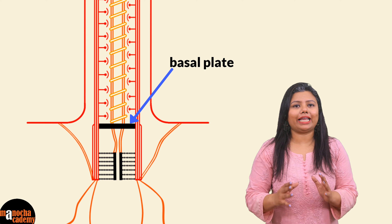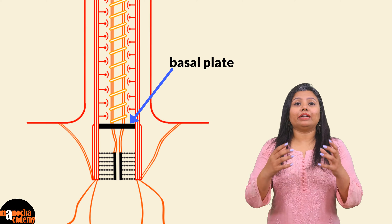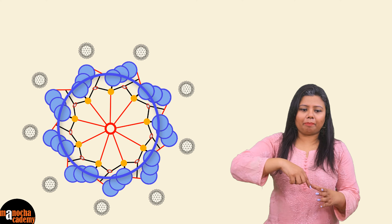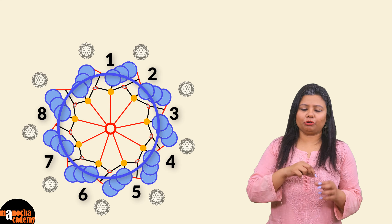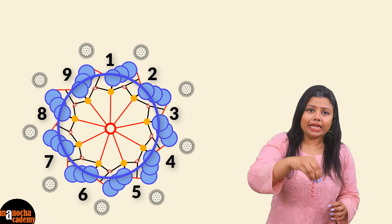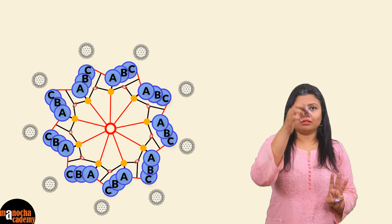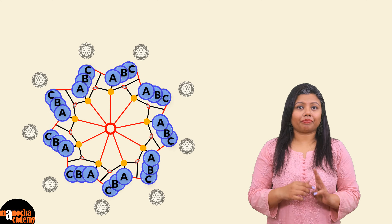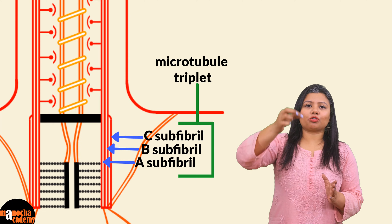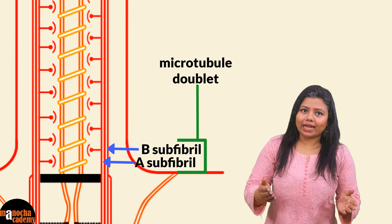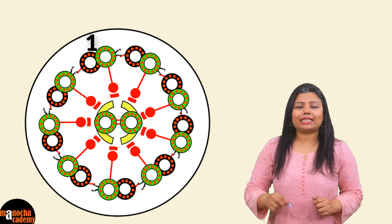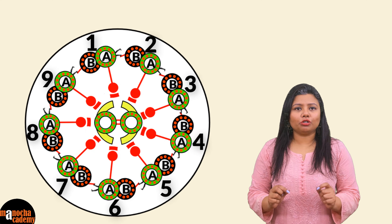At the basal plate, a structural change takes place in the entire protein arrangement. In the basal body, there were nine groups of three microscopic proteinaceous tubules — nine triplets. But from the basal plate, one microscopic tubule in each group stops elongating, so from here the entire structure is made up of nine groups of doublets — nine groups where each group consists of two microtubular structures.